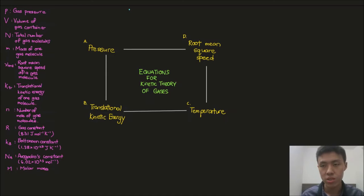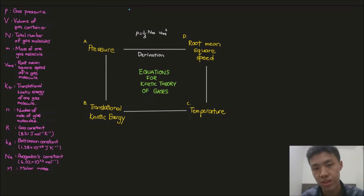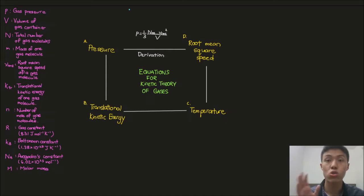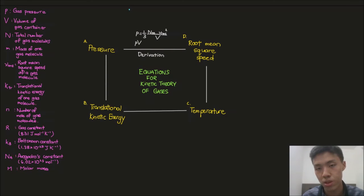In the previous video we did a long derivation and ended up with the equation: P equals 1/3 times N times m times V_rms squared, over V. N is the total number of gas molecules, m is the mass of one single gas molecule, V_rms is the root mean square speed of the gas molecules, and V is the volume of the gas container. We usually express it in the form PV = 1/3 N m V_rms squared, which is more convenient for later derivations.